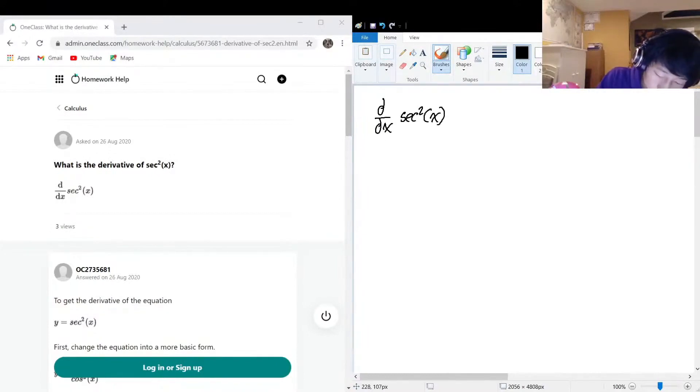Another way that we can write this is we know that secant is equal to 1 over cos, 1 over cos x. So we can rewrite this whole thing as d over dx of 1 over cos x squared.